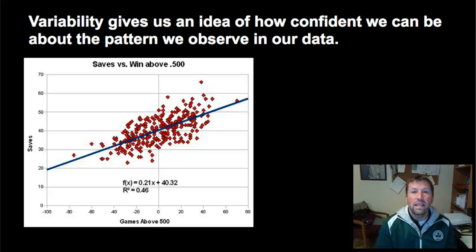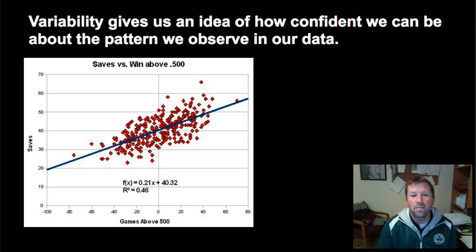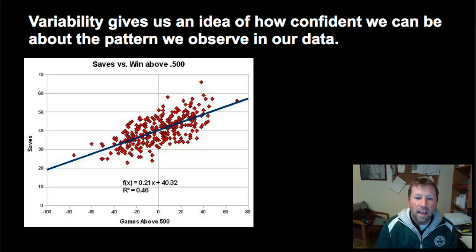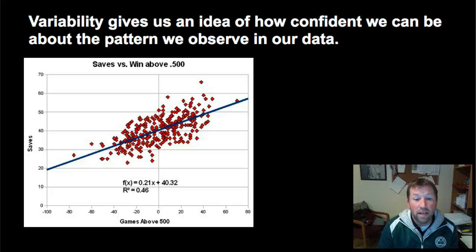Variability basically gives us an idea of how confident we can be about the pattern we observe in our data. Here's a best fit line graph with a bunch of points charted out. This is looking at the number of saves a team has in baseball compared to their record — how many games they are above 500. They plotted out all these data points, created a best fit line, and looked at the slope of that line. The equation shown is f(x) = 0.21x + 40.32, so the slope is 0.21.